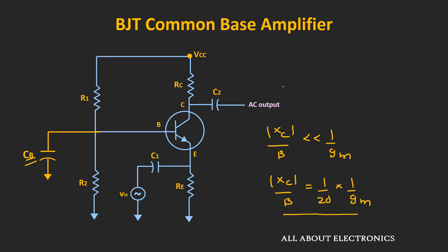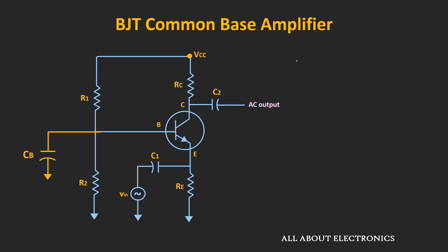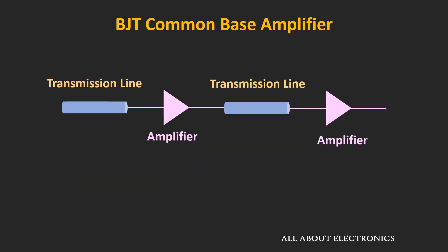If we use this bypass capacitor, then the input impedance of the common base amplifier is 1/Gm in parallel with Re. Usually, the value of Re is much greater than 1/Gm, so the input impedance is approximately equal to 1/Gm. That means for this common base amplifier, the input impedance is very low. The question arises: what is the use of such an amplifier when the input impedance is very low? Well, at high frequencies, these amplifiers can be used for impedance matching with transmission lines, because for transmission lines the characteristic impedance is in the range of 50 ohms. So that is one such application where these low input impedance amplifiers can actually be used.